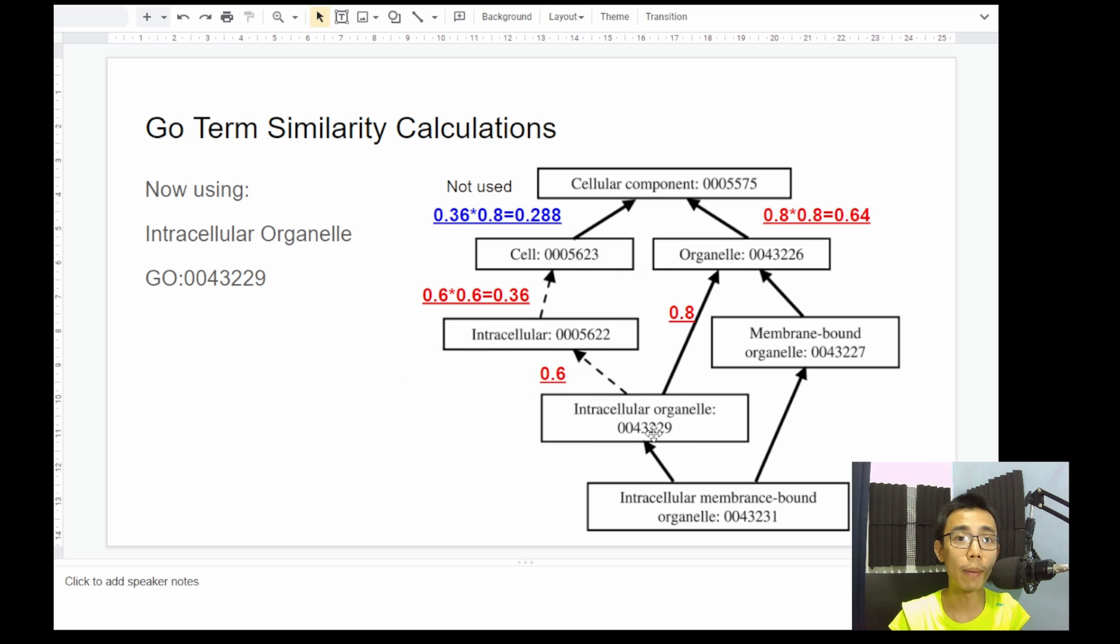But if there's two jumps away, that will be 0.8 times 0.8. So in this case, the relationship between intracellular organelle and cellular component will be 0.64. So same theories apply where intracellular organelle with intracellular is 0.6 and intracellular organelle to cell is 0.36 while intracellular organelle in this route that we calculate is 0.288.